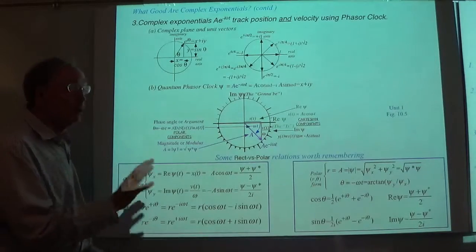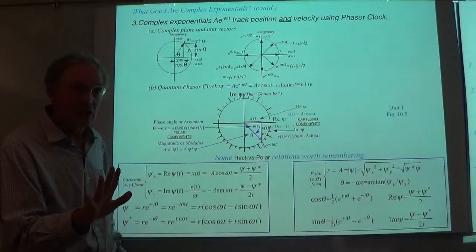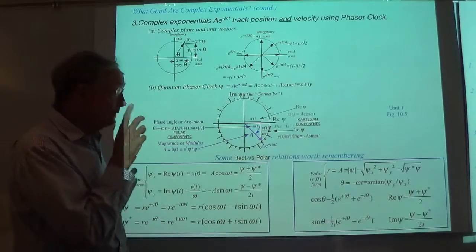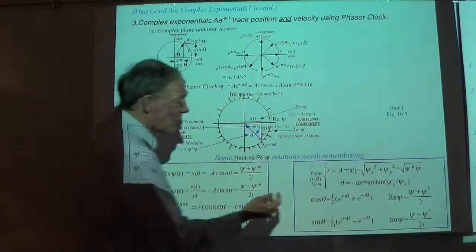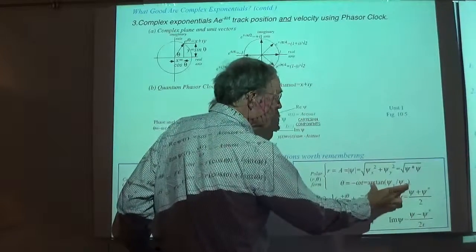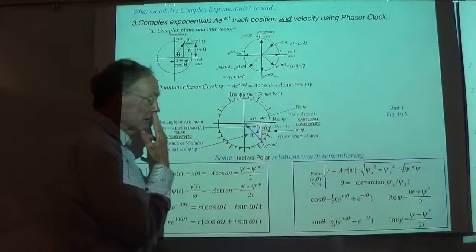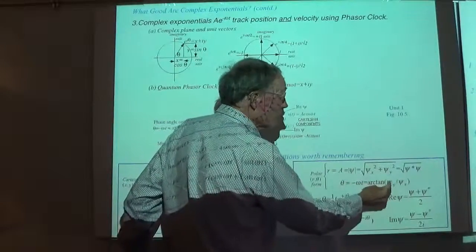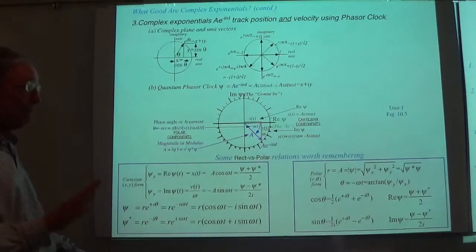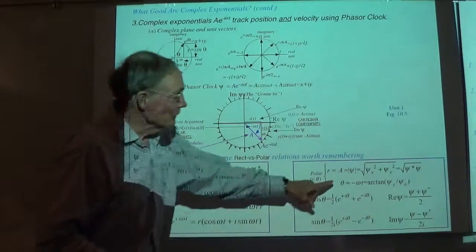The polar-coordinate-to-Cartesian conversion on all mathematical calculators is doing exactly this conversion. But whenever you have to convert, use atan2 rather than the regular arc tangent, because the arc tangent is a multi-valued function. You put in y and x separately, and you won't get in trouble determining which quadrant your angle theta is in.